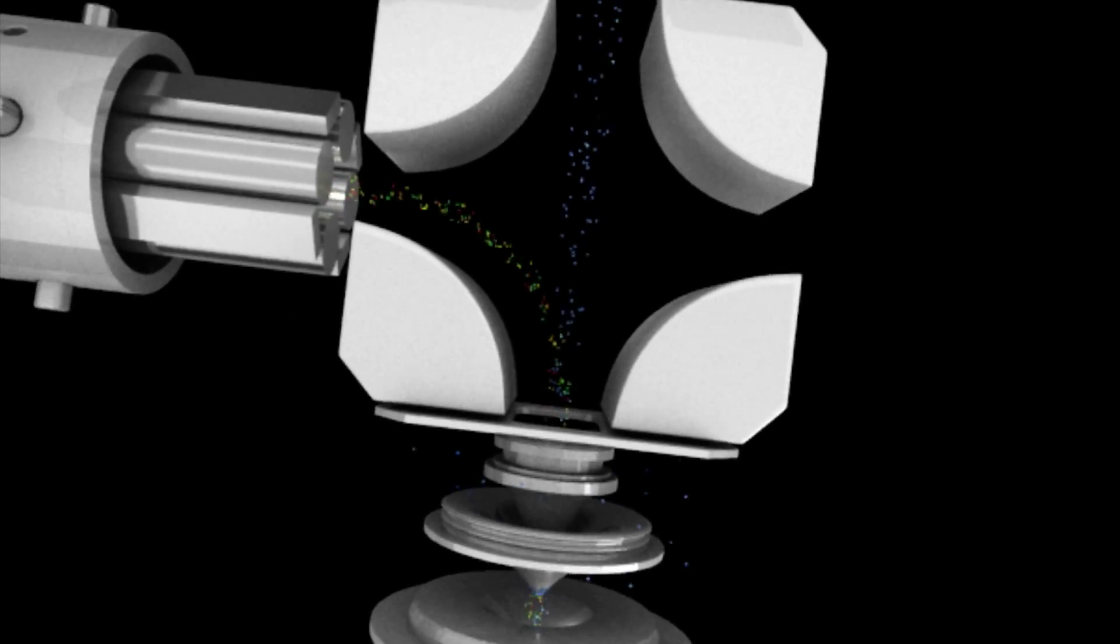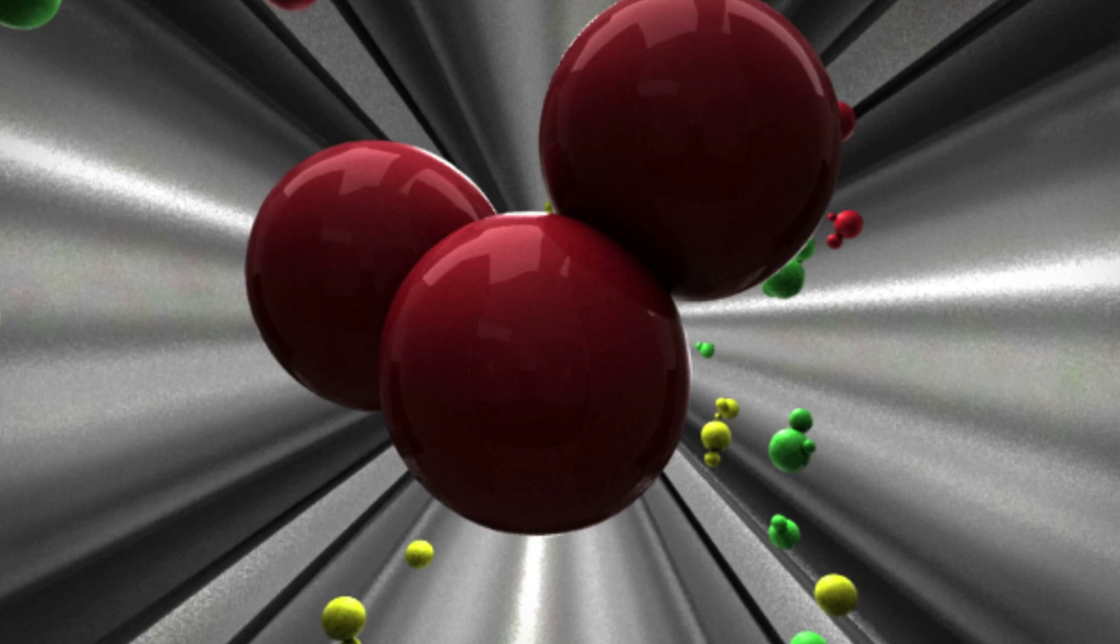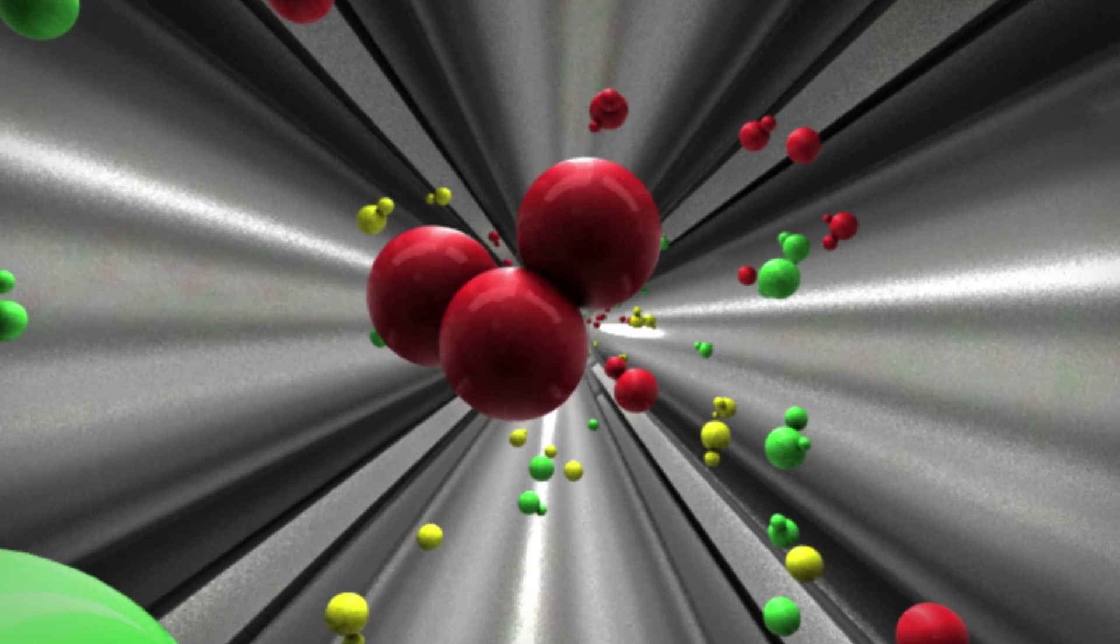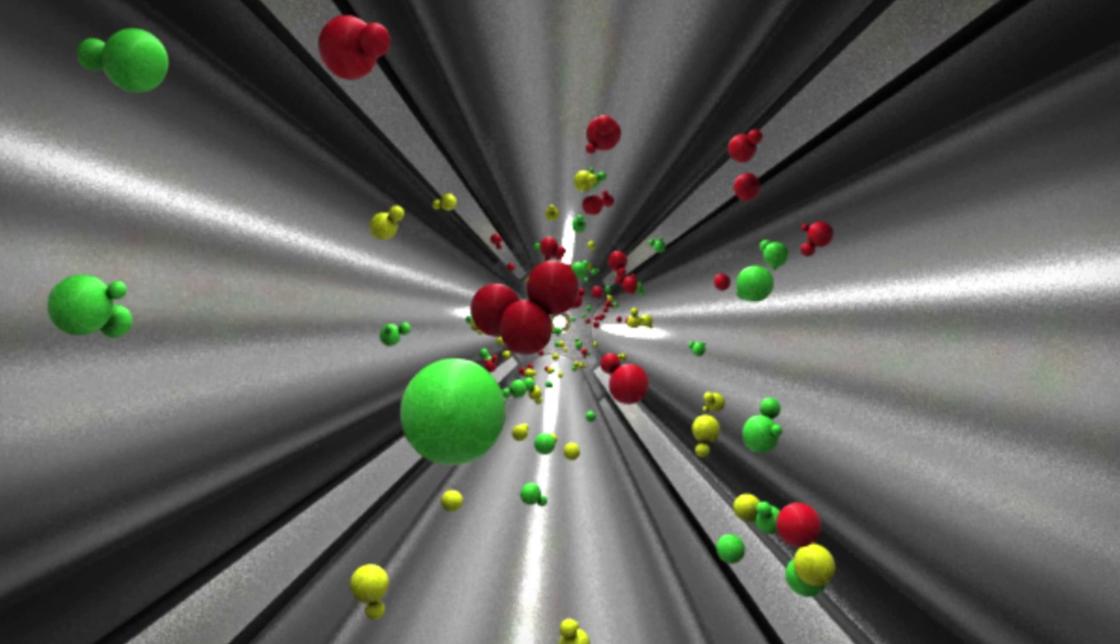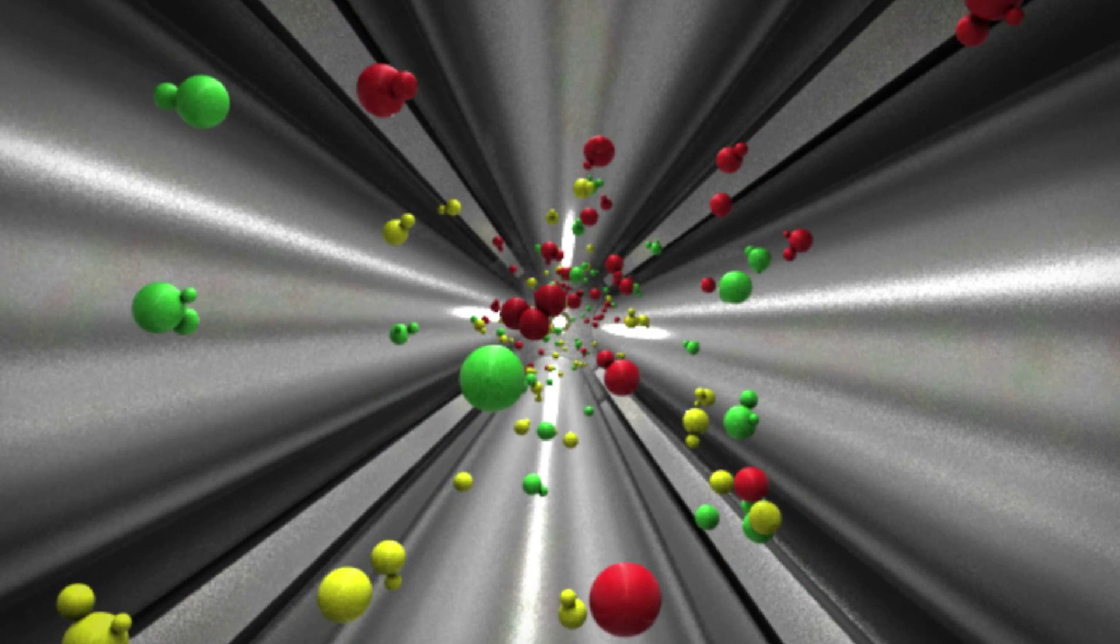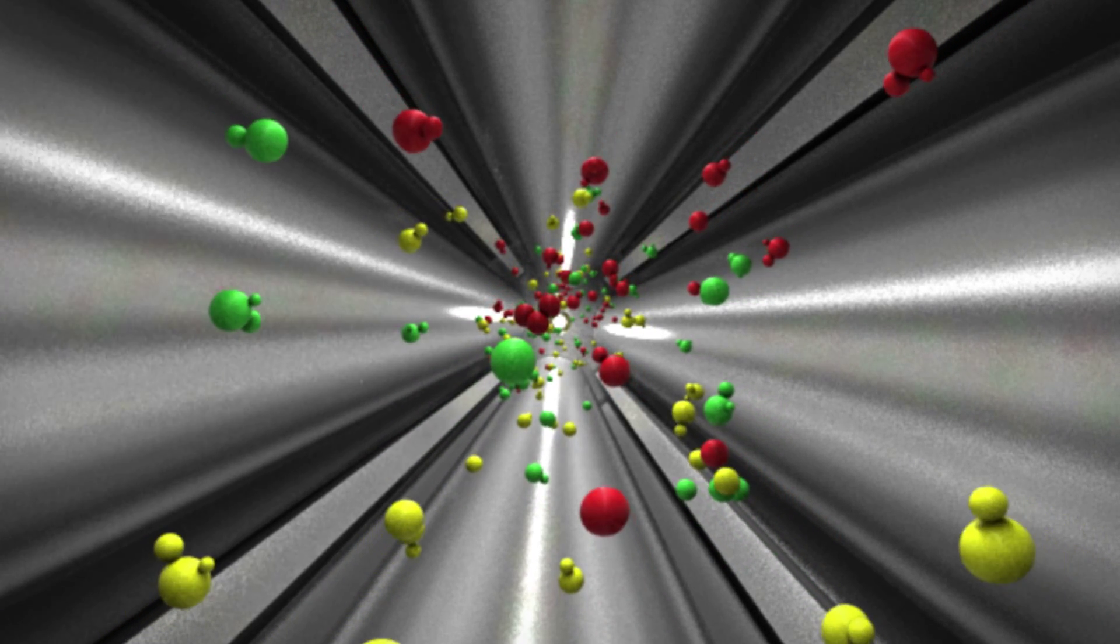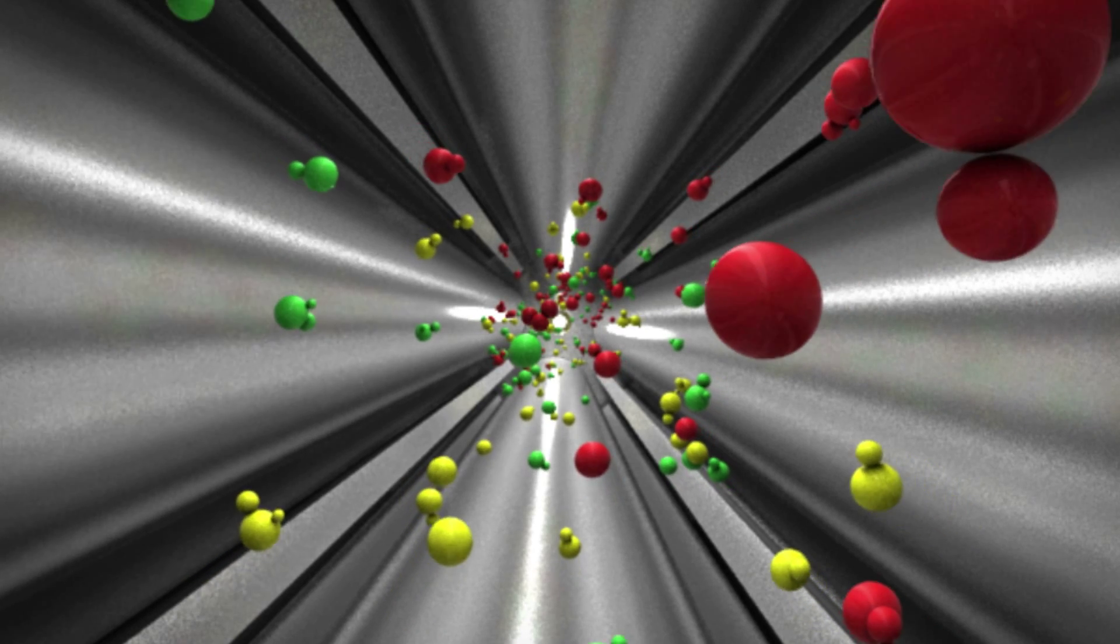The focused beam of ions passes from the quadrupole ion deflector into the universal cell, the only cell with both low and high mass filters. Depending upon your required level of interference removal and detection limits, the universal cell can be run in three different modes.